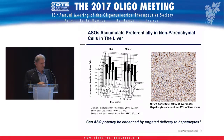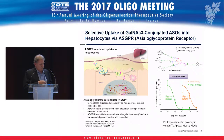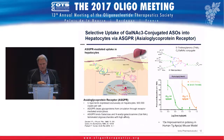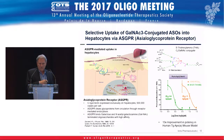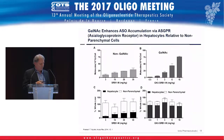We've known for years about GalNAC conjugation. What is shown here is the chemistry — you've seen quite a bit of this already. In essence, redistribution to hepatocytes results in a tremendous increase in potency: the same molecule with the conjugate is approximately 30-fold more potent in man.